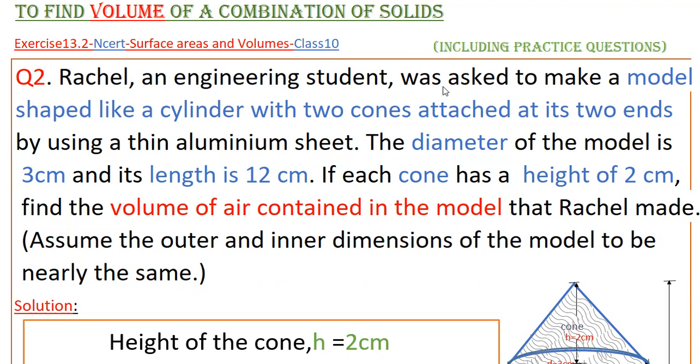Rachel, an engineering student, was asked to make a model shaped like a cylinder with two cones attached at its two ends by using a thin aluminum sheet. The diameter of the model is 3 centimeters and its length is 12 centimeters. If each cone has a height of 2 centimeters, find the volume of air contained in the model that Rachel made. Assume the outer and inner dimensions of the model to be nearly the same.